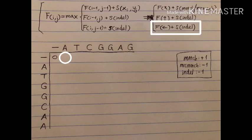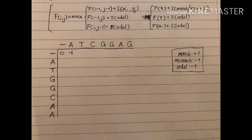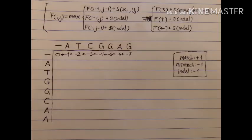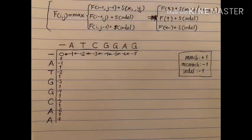So you ask yourself what is the value to the left — it's zero. You add to that the score of an indel, which is minus one, giving minus one. Since this minus one corresponds to looking at the cell to the left, we draw an arrow to the left. Then we continue for the rest of the row using the same approach, only looking left. And we do the same thing for the first column.